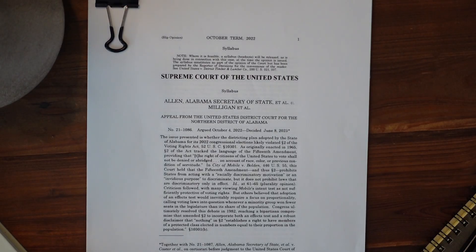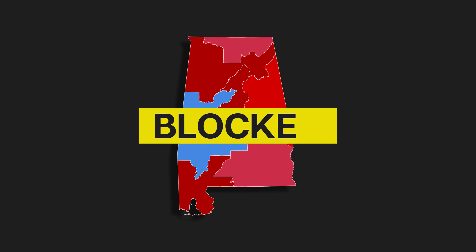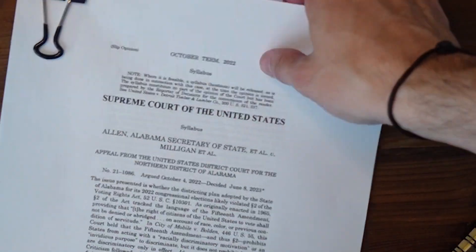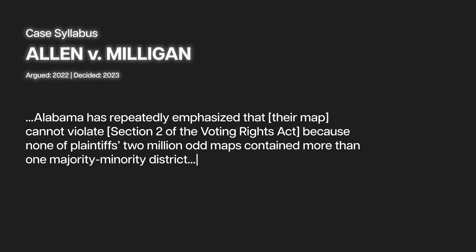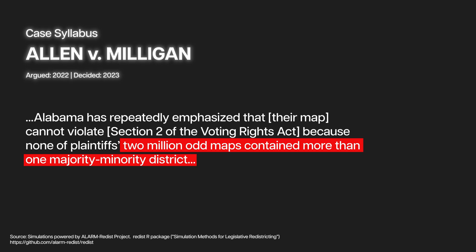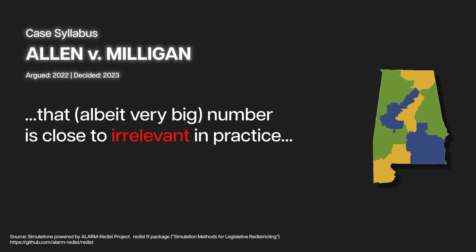Take a look at this. This is the Supreme Court's decision saying that Alabama's maps after the 2020 census were unconstitutional. There's this interesting paragraph in here that we're going to focus on today. While the state says that the two million maps they simulated do not contain more than one majority black district, are race neutral, and therefore not violating Section 2 of the Voting Rights Act,